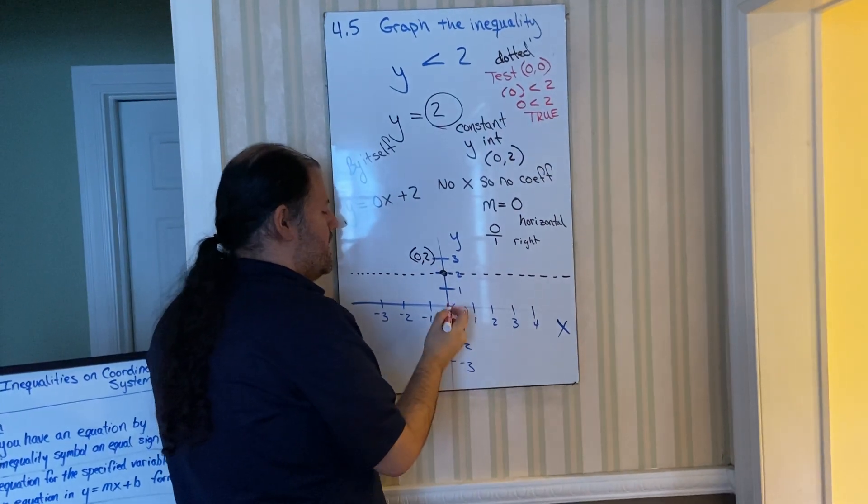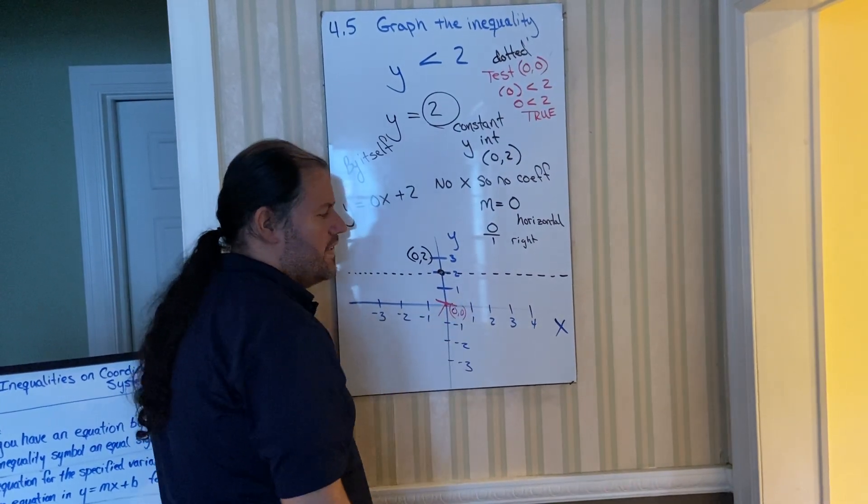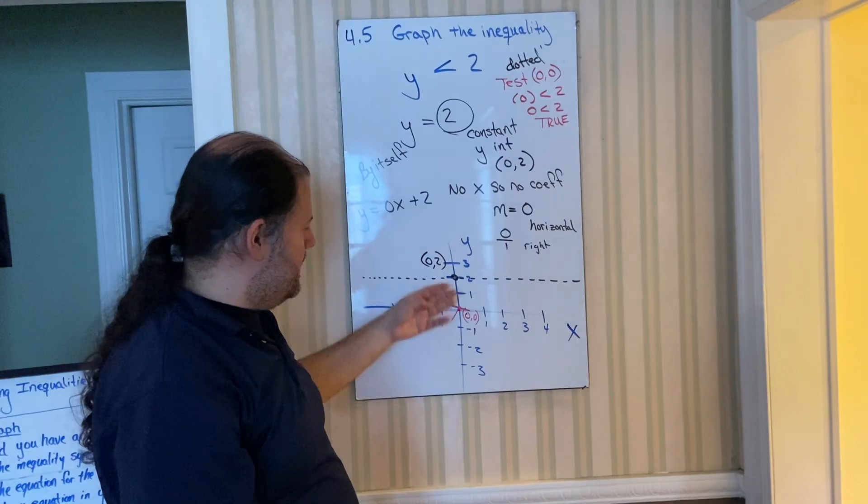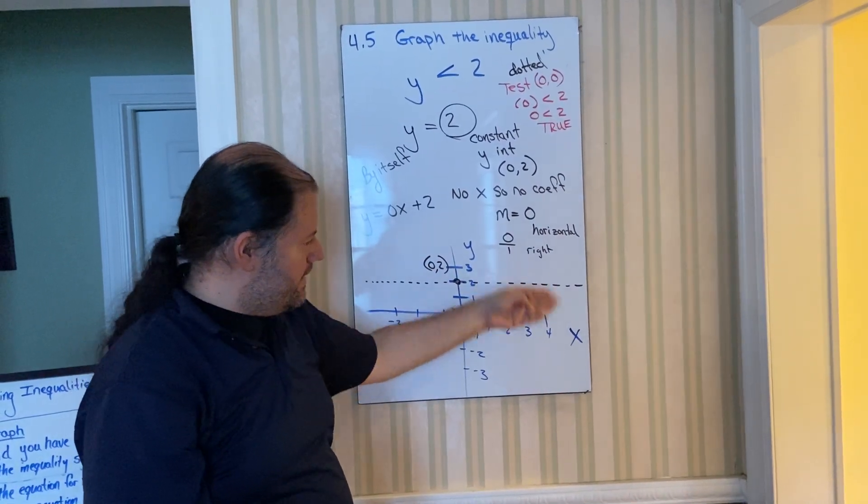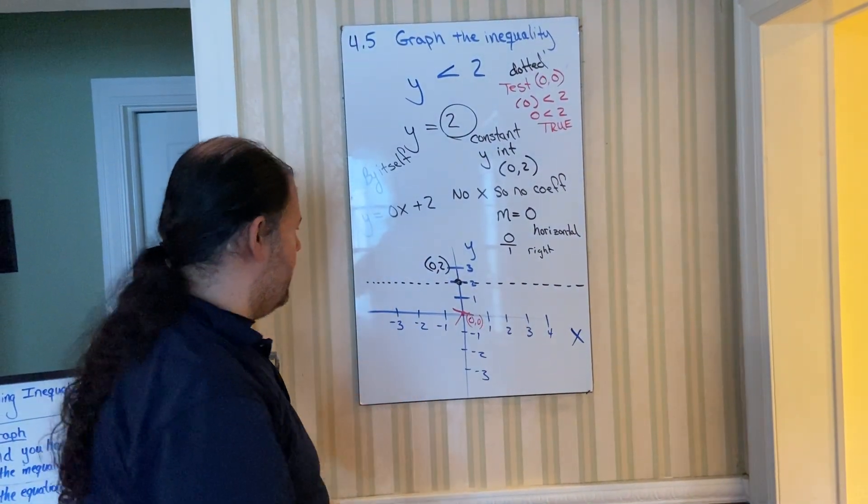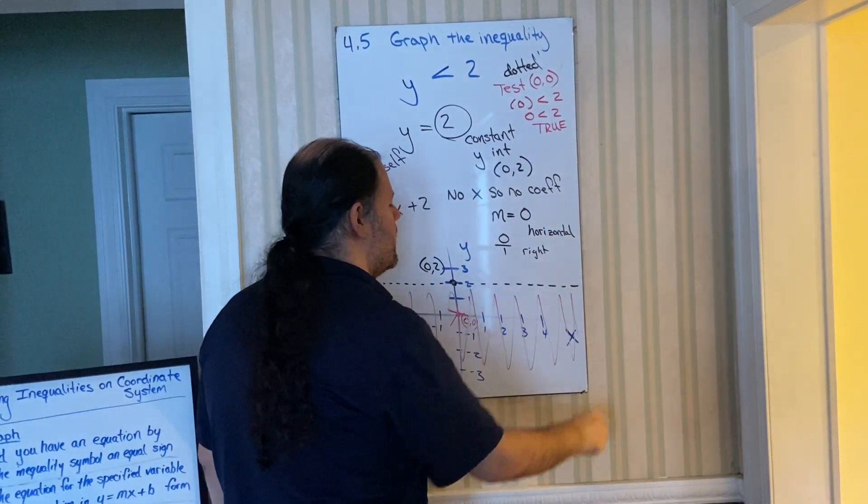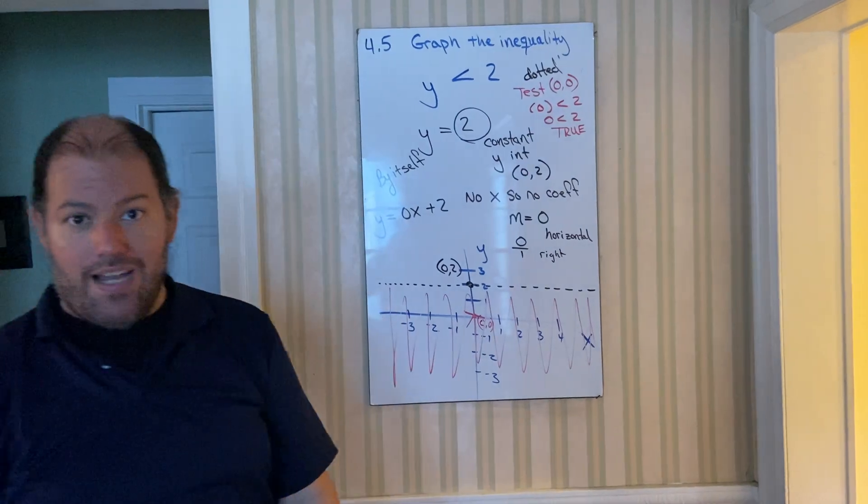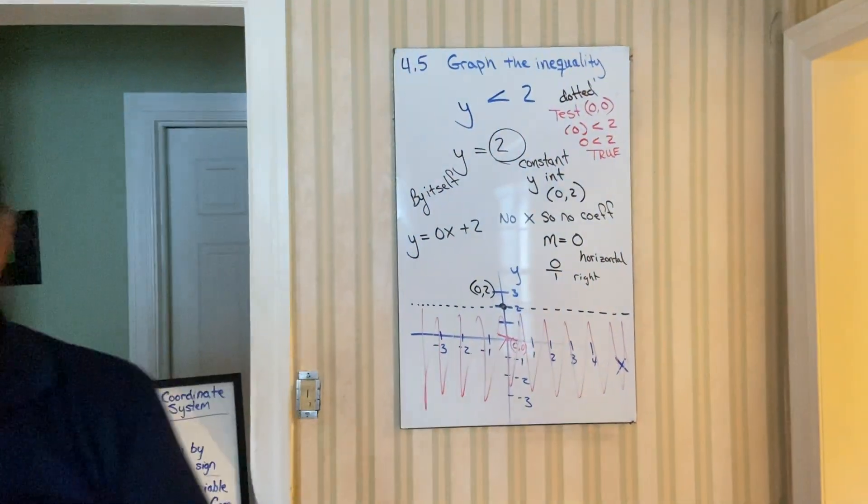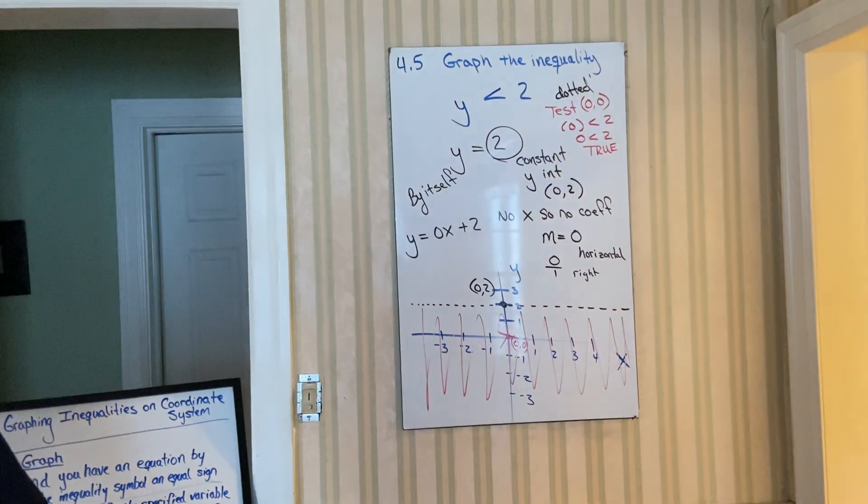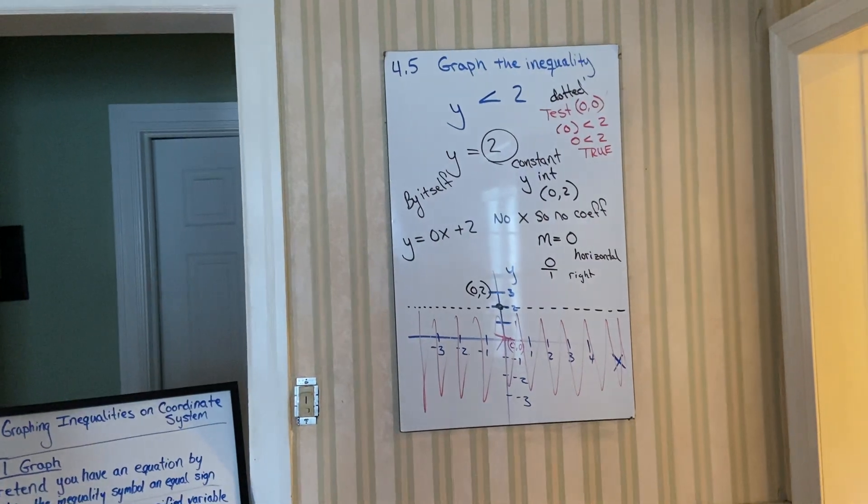So where my test point is, put a T. And since I only can shade in the T region, I'm going to shade everything that's below. So we showed you one where we have y, and we showed you one where we only have x in the inequality problem.